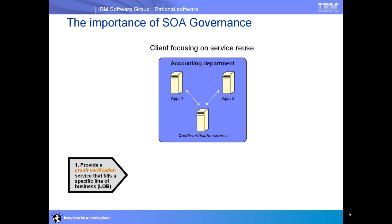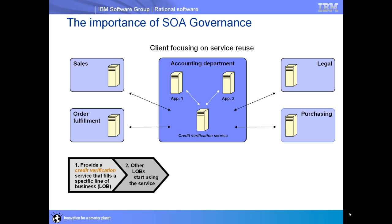Let's begin by considering the importance of SOA governance with an example to illustrate this. An accounting department has come up with a credit verification service that fulfills their departmental need. As part of delivering this service, other lines of business discover it and begin to use it — promoting reuse and benefiting the broader organization.